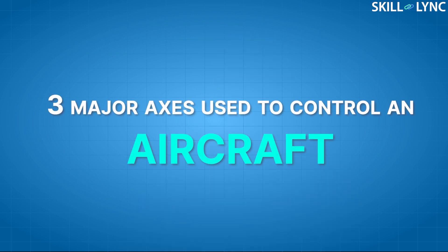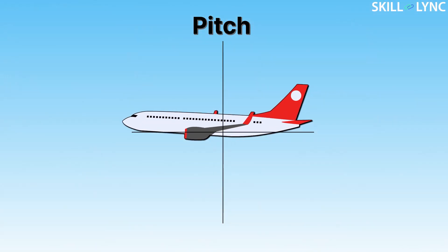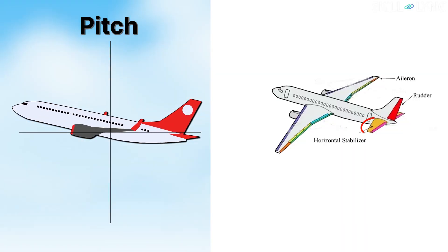Before we go deeper and discuss this topic, it would be better if we learn a few terminologies along the way. There are three major axes used to control an aircraft. The first one is called the pitch axis. When the aircraft wants to gain altitude during powered flight, the nose of the aircraft is tilted upward — this is called pitch up. Similarly, moving the nose of the aircraft down is called pitch down, which is used to decrease the altitude. This is controlled by the horizontal stabilizer.